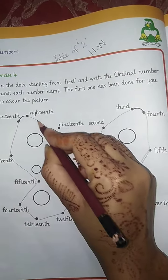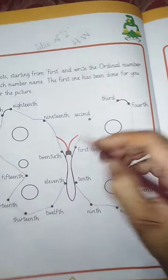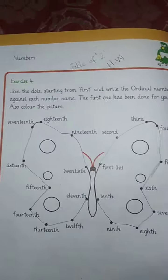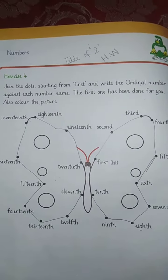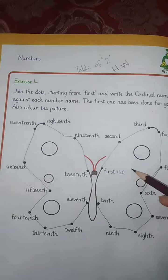18th, already match hai. 18 ke baad hai 19th and 19th ke baad hai 28th. This is our butterfly which has been drawn and you will color it as you like, which color you want to color in this picture.